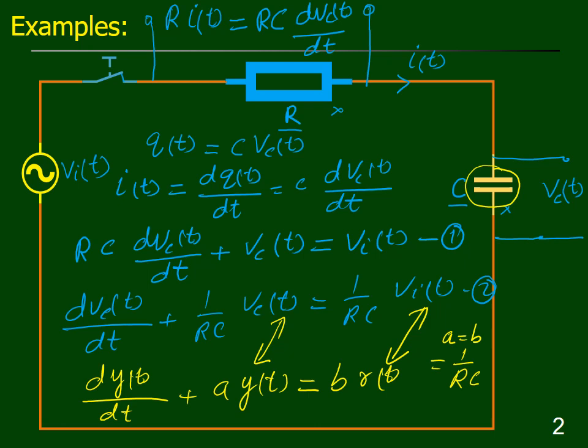It is important to note that a capacitor is an electrical component which stores energy — it is a memory element that can retain information about the signal. Any system which has a memory element can be represented by dynamic systems, whose characteristics are described by differential equations. If the memory elements and other components are linear, the circuit can be represented by a first-order differential equation when there is only one memory element. More than one memory element may yield higher-order differential equations.